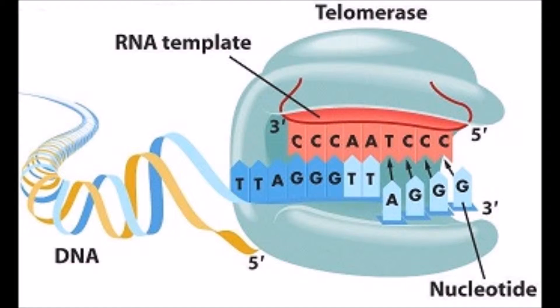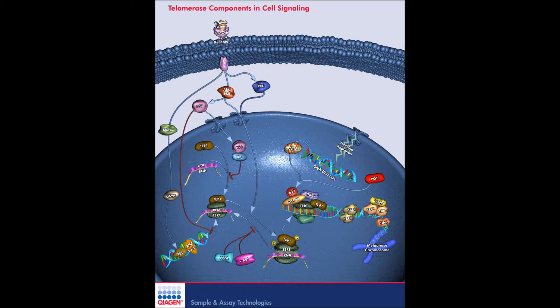Telomerase is a naturally occurring enzyme in cells. Telomerase works to repair your telomeres, or the caps of your chromosomes. As your cells divide, your telomeres get shorter and shorter with each division, until they get so short that the cells go through apoptosis.